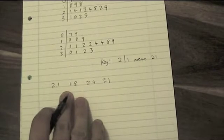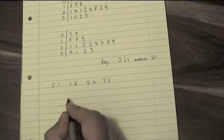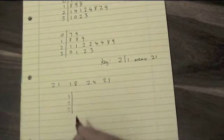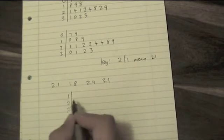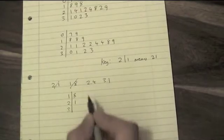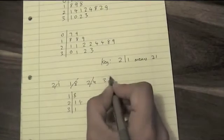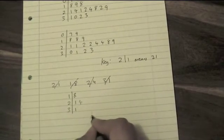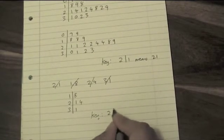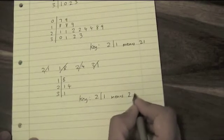So 1, 2, 3, vertical line. I'd write a 1 next to the 2 here for that one, an 8 next to the 1 there for that one, a 4 next to the 2 there for that one, a 1 next to the 3 there for that one, and this time my key would read 2-1 means 2.1.